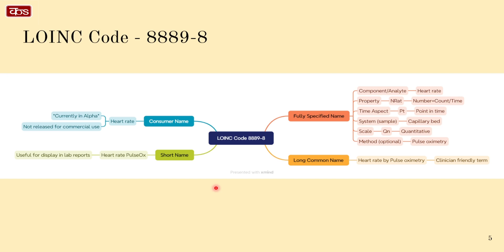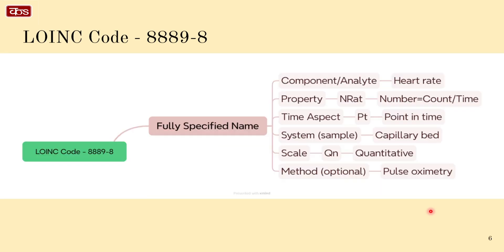This is the mind map for LOINC code 8889-8. The long common name is heart rate by pulse oximetry, and it is clinician friendly. The second name is quite cryptic and the consumer name is way too short. Interestingly, the LOINC code and long common name conform to the HL7 v2 OBX-3.1 and 3.2 segments respectively. The OBX-3 segment contains the observation identifier. Let us look at the FSN in some detail in the next slide.